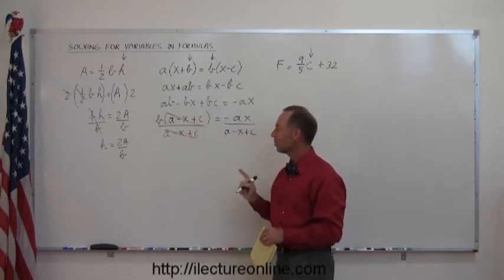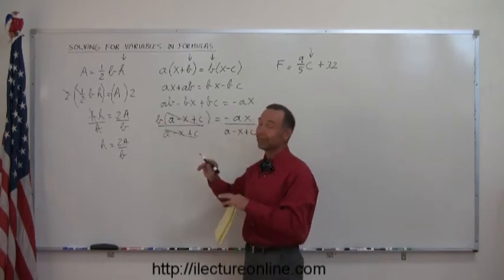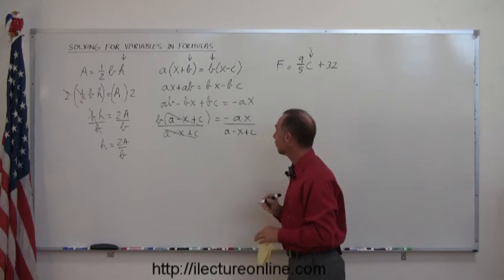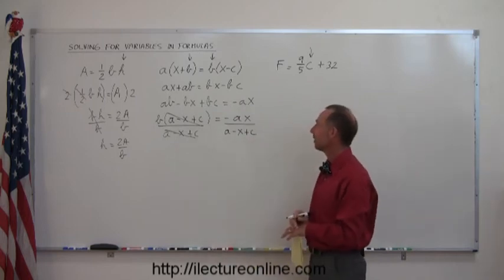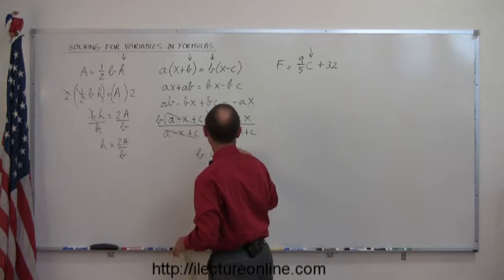Make sure that this is multiplied, not added. If this was B plus that, then of course you can't do that, but since it's multiplied, you're allowed to do that, and over here you just leave it as this, and so you can write that B equals minus AX over A minus X plus C.